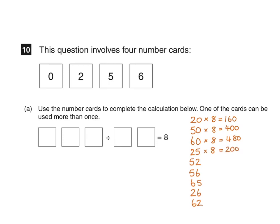25 multiplied by 8 is 200, 52 multiplied by 8 is 416, 56 multiplied by 8 is 448, 65 multiplied by 8 is 520, 26 multiplied by 8 is 208, and 62 multiplied by 8 is 496. So these are all the possible outcomes.